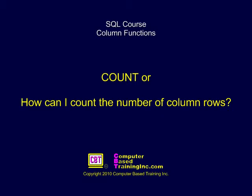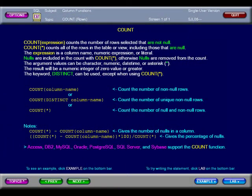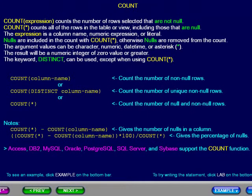COUNT, or how can I count the number of column rows? COUNT with an expression counts the number of rows selected that are not null. COUNT star counts all of the rows in the table or view, including those that are null.